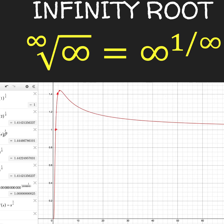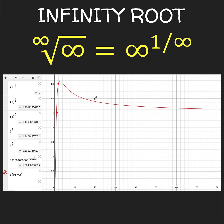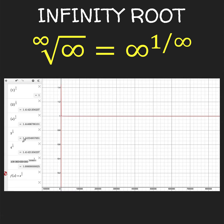That value happens to be the maximum height of this red function. Then for values of x greater than e, the function is decreasing, and it keeps on decreasing so that at about x equals 80 we have a point now closer to 1 compared to when x equals 2. At x equals 100 million, the value of the function is closer and closer to 1. So we suspect that the value of this expression is 1.